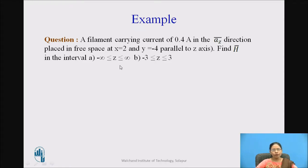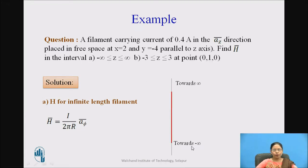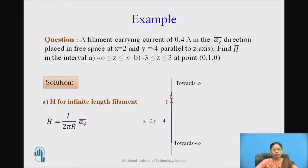Let us first solve for the infinite length filament. The equation for H bar for infinite length filament is I divided by 2πR times A_phi bar. The infinite length filament ranges from minus infinity to plus infinity, placed at X equals 2 and Y equals minus 4. This filament is parallel to the Z axis and carries current I in the positive A_Z bar direction.